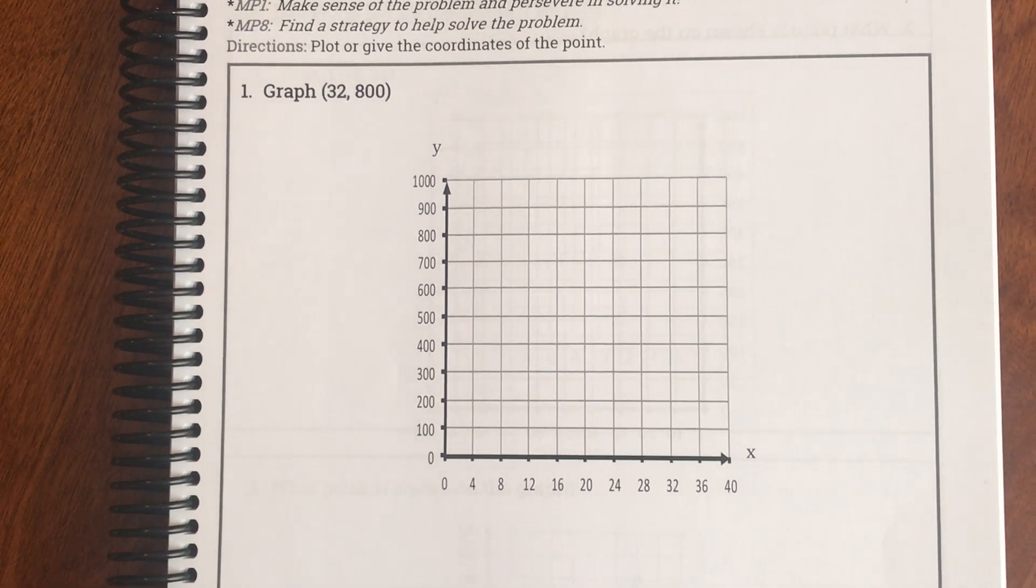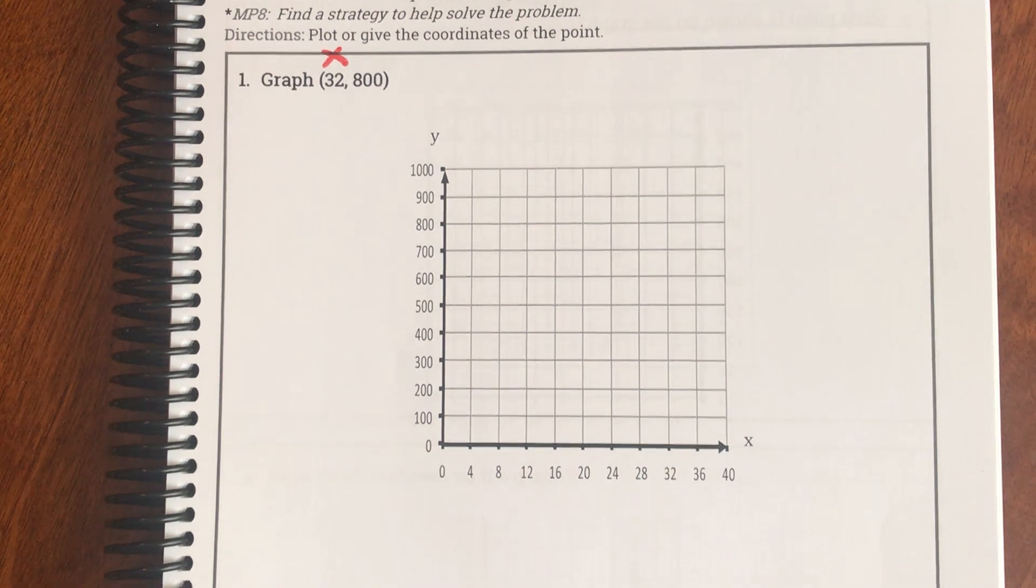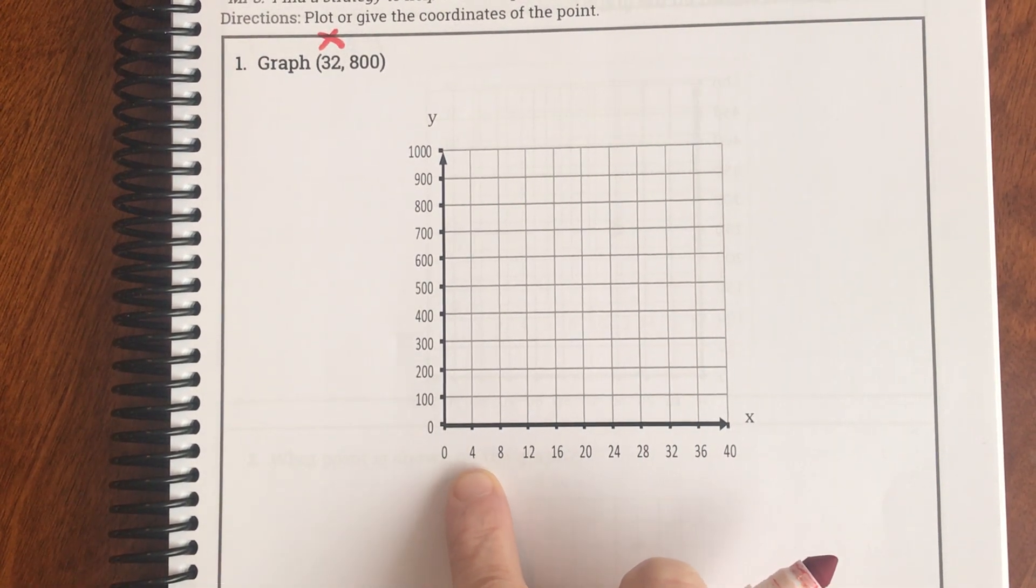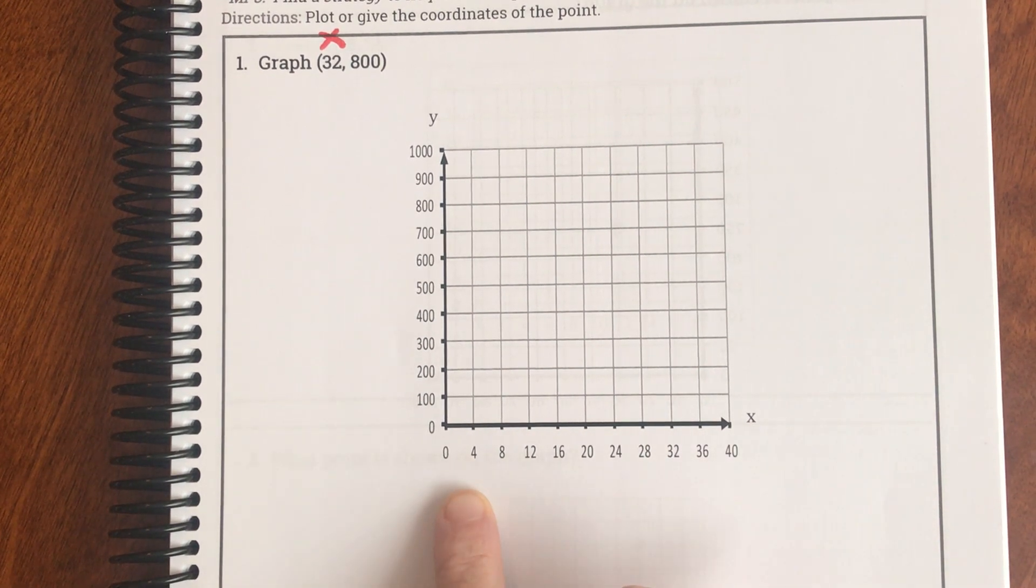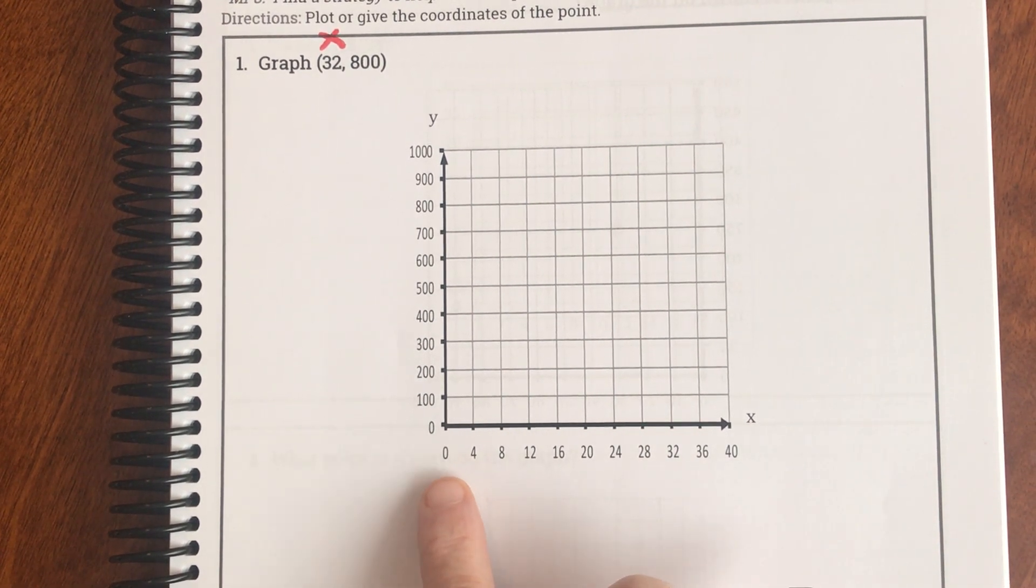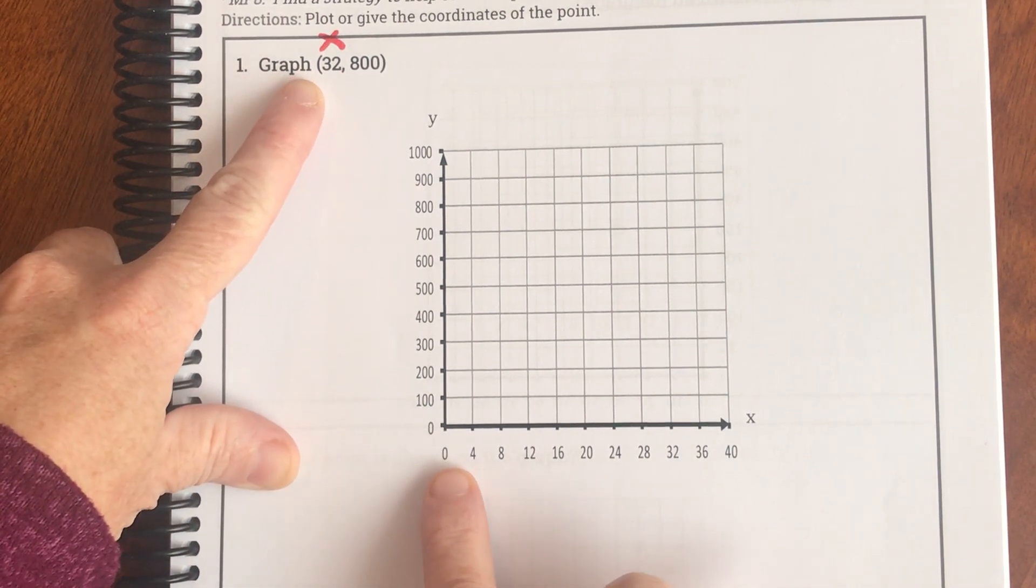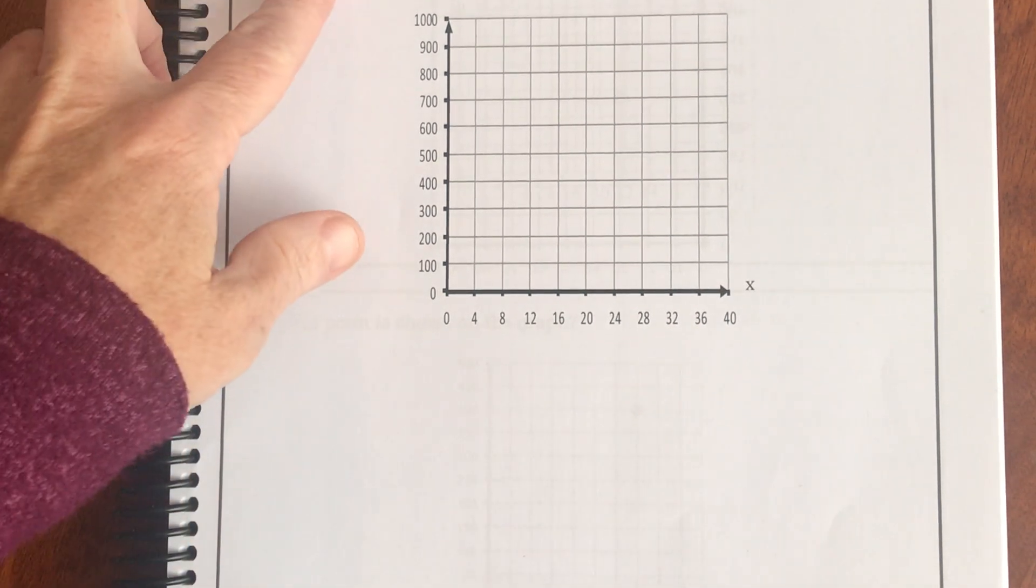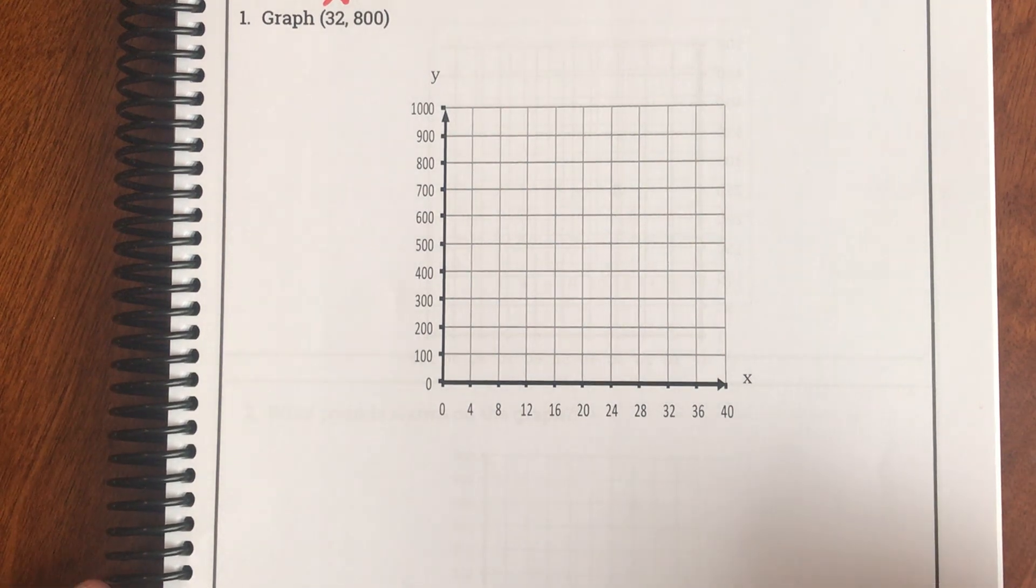What you need to know about that is, when you change the scale, you have to have a consistent scale. Notice the x was 32. If I look down here, look what they created. They decided to count by fours. The reason they counted by fours is because 32 is a multiple of four.